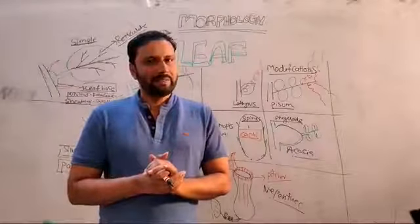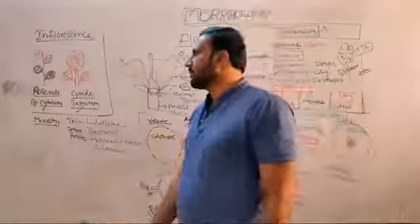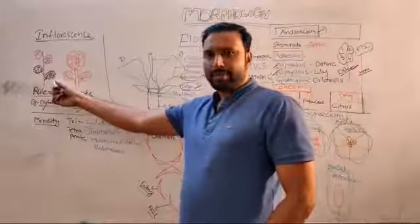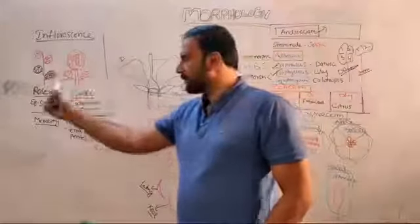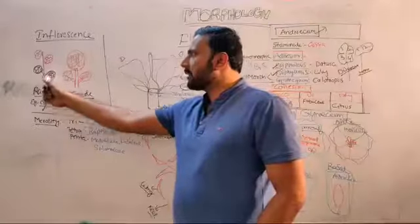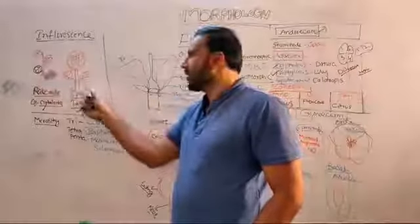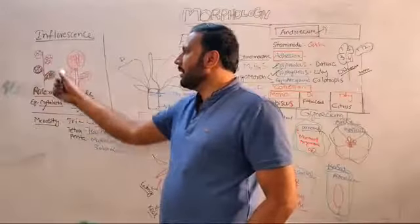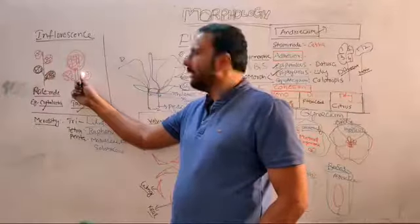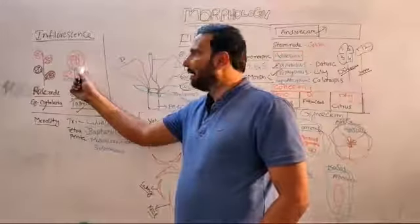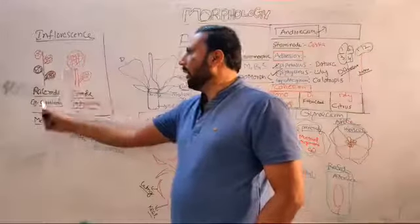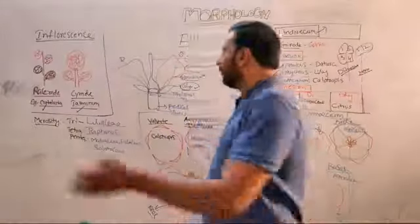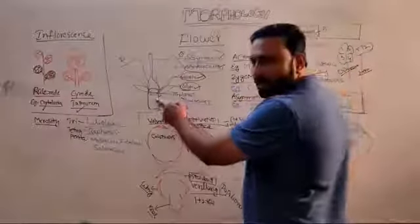Inflorescence — mode of arrangement of flowers on the peduncle is called inflorescence. There are two types: racemose and cymose. In racemose, flowers are arranged in an acropetal manner and the peduncle grows indefinitely. In cymose, flowers are arranged in a basipetal manner and the peduncle grows definitely due to the presence of a flower at the terminal position. Example: racemose — Crotalaria; cymose — Jasminum.